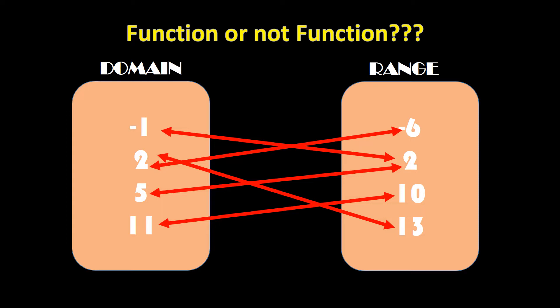So how would we know whether this is a function or not? Let's try the first example. We have the domain with -1, 2, 5, and 11, and the range with -6, 2, 10, and 13. As you can see, there are connectors or lines connecting your domain and the range. Now, you are to check only the domain because our main concern when dealing with function or not function is only the domain, so that you will not be confused later on.